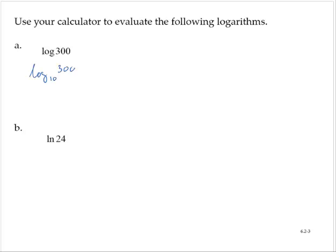If we try to do this one without a calculator, it would be difficult because there's not a nice power of 10 that gives us 300. 10 to the second is 100, and 10 to the third is 1,000. So it's probably between 2 and 3, but that's about as good as we could say.